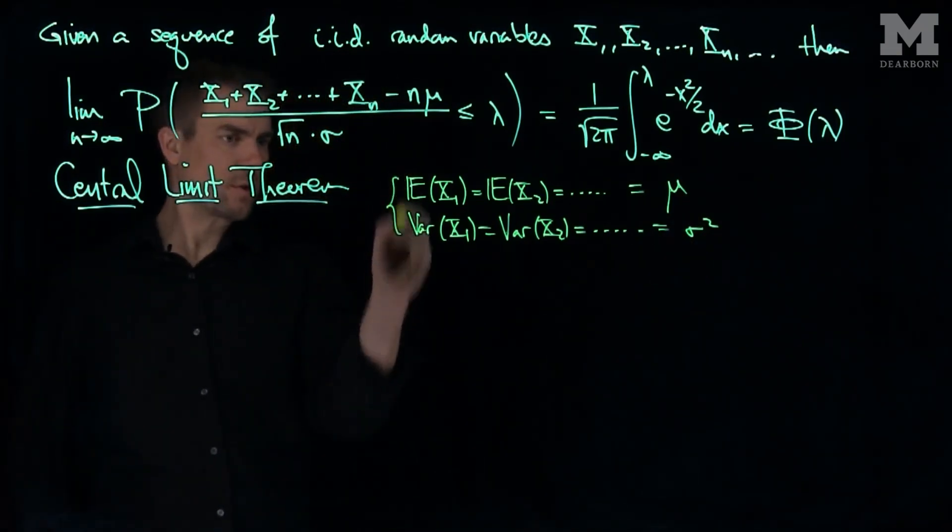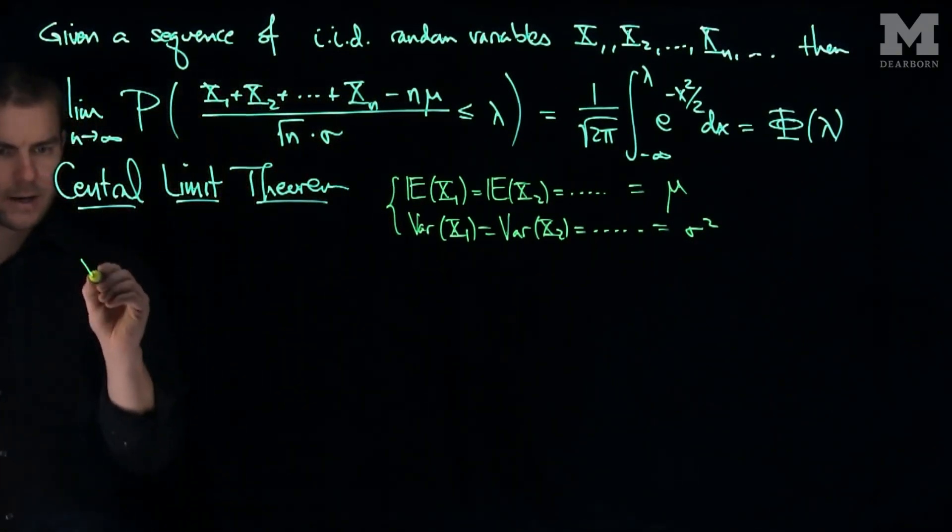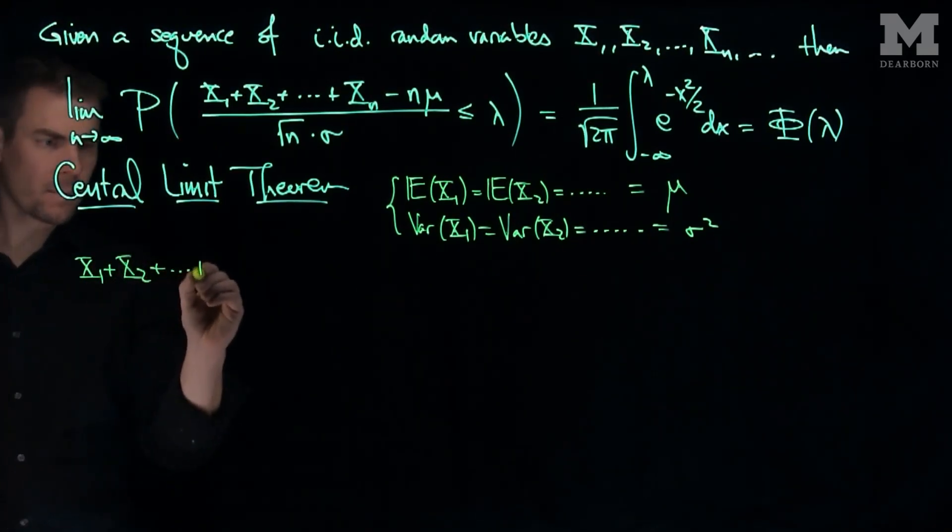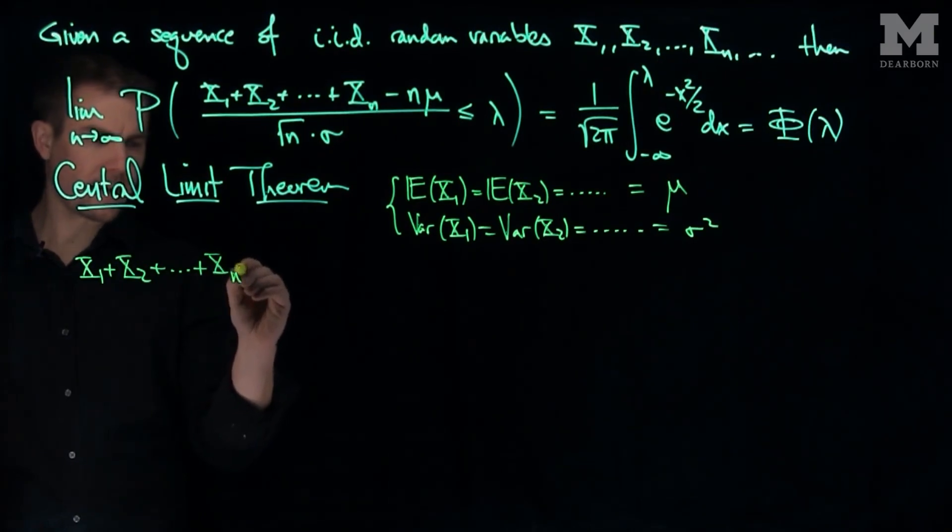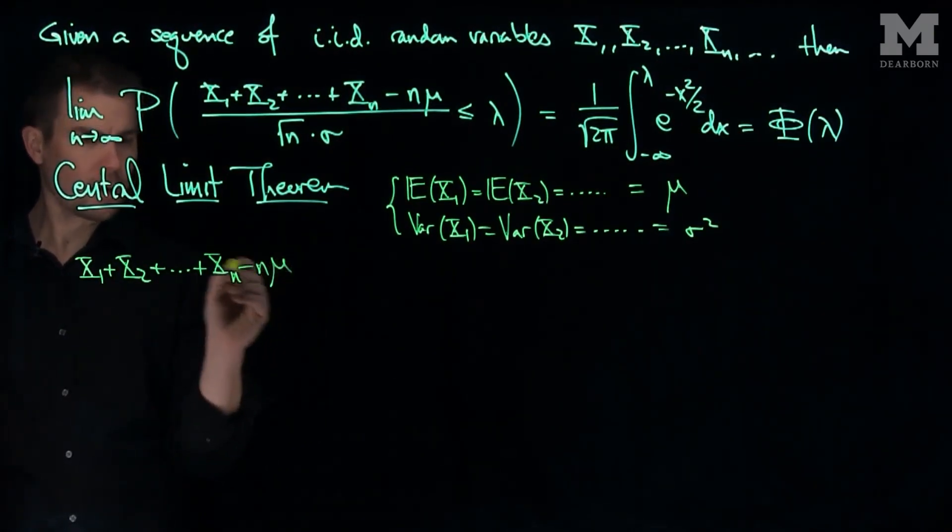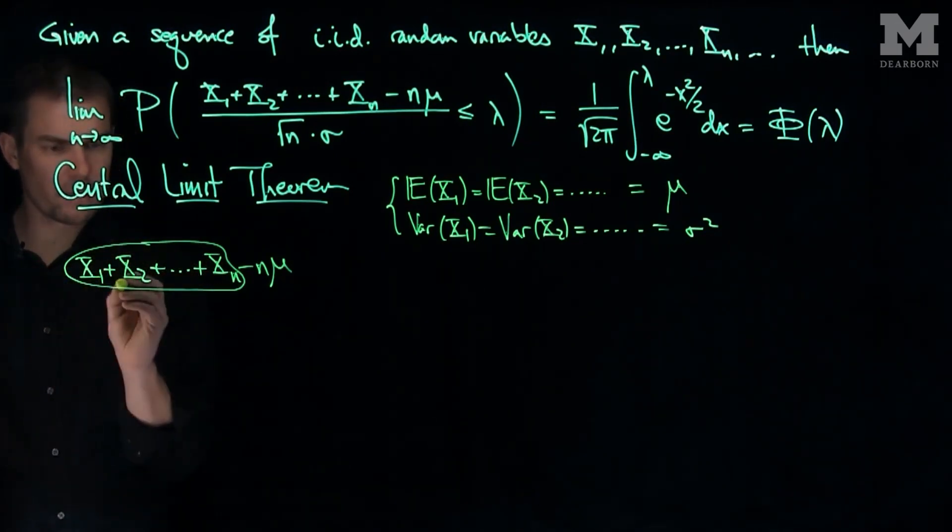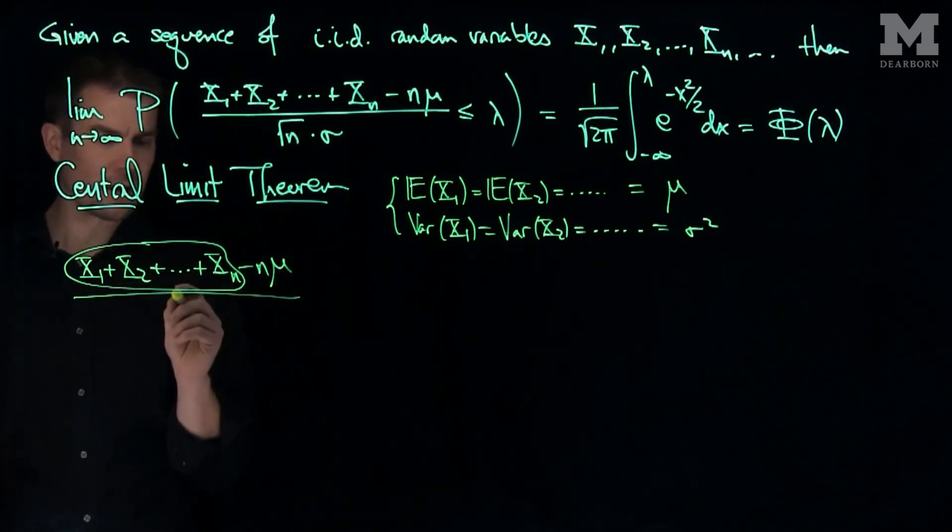And so with these two observations we can make the note that x1 plus x2 plus xn minus n mu, so n mu is the expected value of that random variable, so the numerator has an expected value of zero.